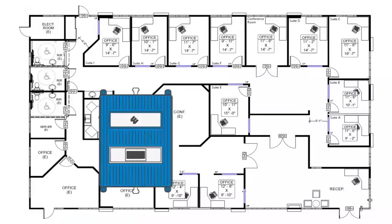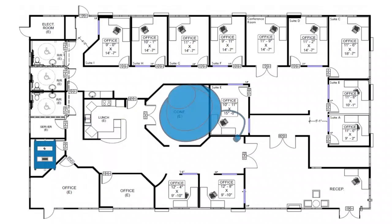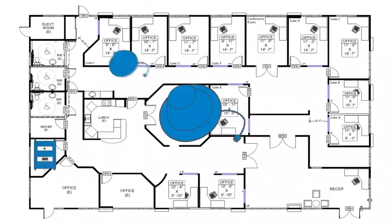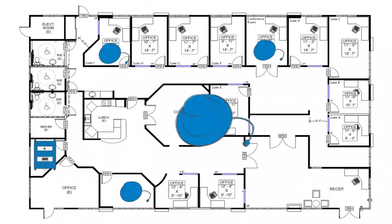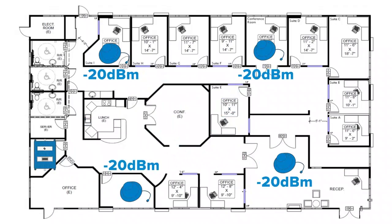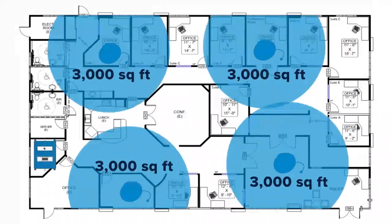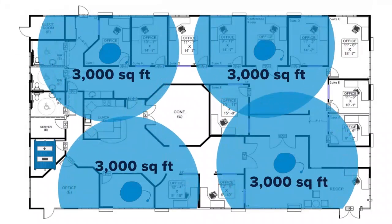DBM is also useful for estimating the indoor coverage area we might expect from an amplifier system. For example, an indoor antenna that is radiating negative 20 DBM can effectively cover about 3,000 square feet.